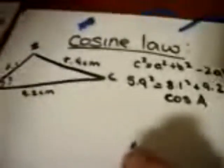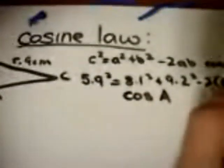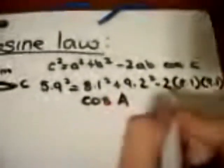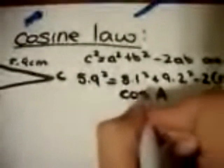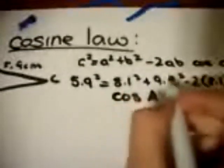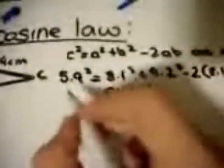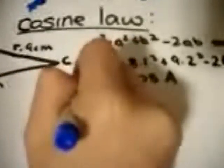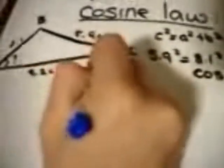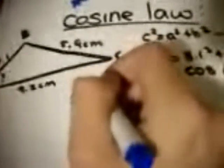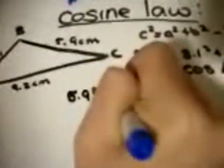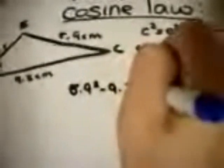Now, because we can see that our unknown value is together with the values that we have, we need to isolate cosine A. So in order to do this, we need to move 8.1 squared and 9.2 squared to the other side. So we can start by doing 5.9 squared minus 9.2 squared minus 8.1 squared.